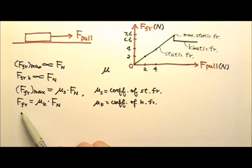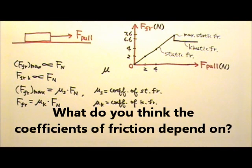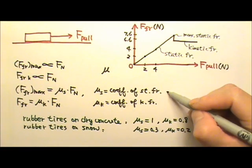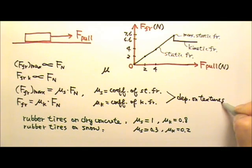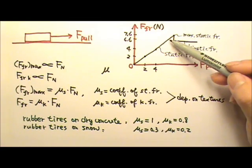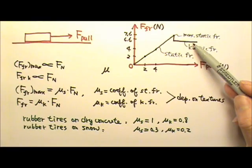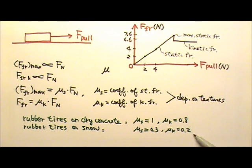So the amount of kinetic friction depends on this μk and the normal force. What do you think μk depends on? Both of these coefficients of friction depend on the texture of the contact surfaces. For example, rubber tires on dry concrete road has a μs of about 1 and μk about 0.8. For rubber tires on snow, μs is about 0.3 and μk is about 0.2. μs is usually higher than μk because the maximum possible static friction is usually higher than the kinetic friction. And the smaller the μ, the more slippery the contact surfaces.